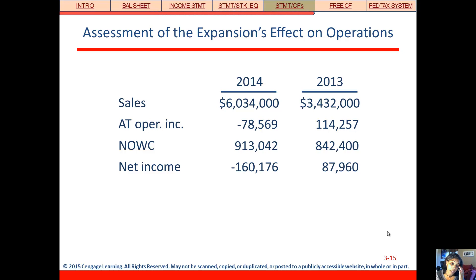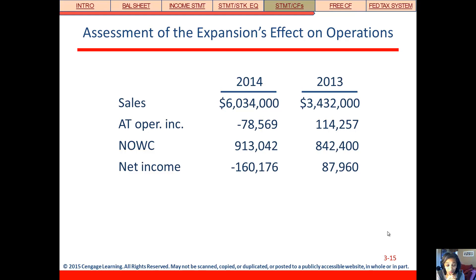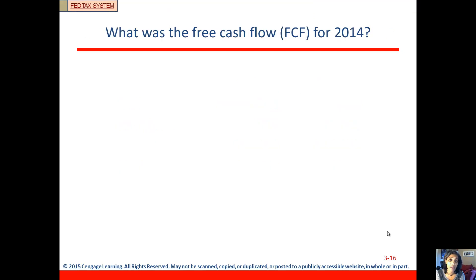Now let's look at the bigger picture — what effect did the expansion have on overall operations? Looking at key line items: sales increased, which is always a good thing if you can support it. After-tax operating income decreased. Net operating working capital increased. And net income decreased. So it's kind of a mixed bag — some things went up and some things went down.